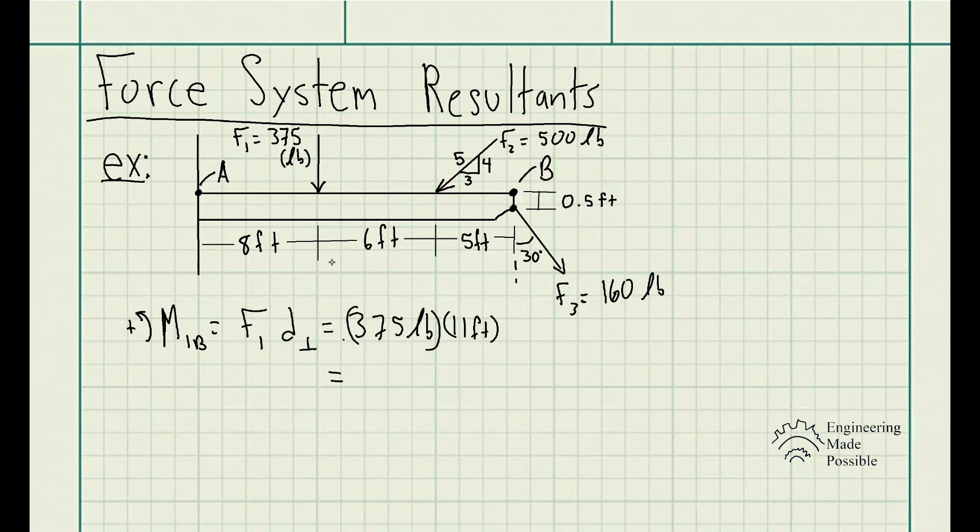The moment is equal to a force times the distance that's perpendicular to that force. In this case, since it's along the vertical axis, this is already perpendicular to this beam. So it's 6 plus 5, so it's 375 pounds of force times 11 feet, which is 4,125 pound feet, the moment being caused by force 1.